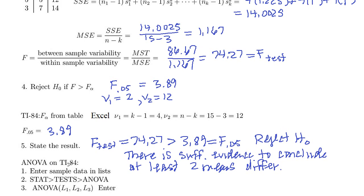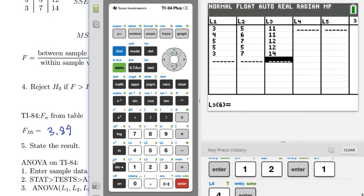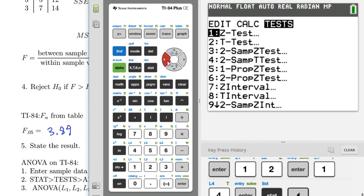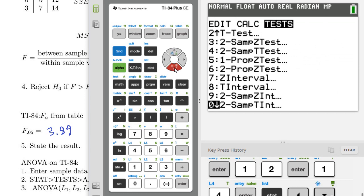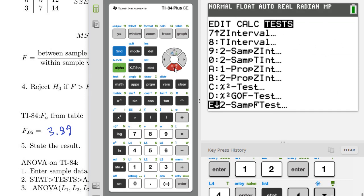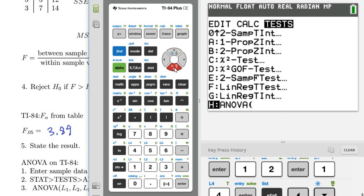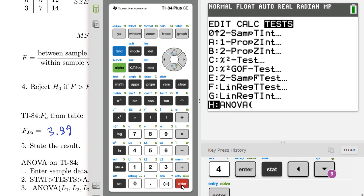And then we can check this on the TI-84 doing STAT ANOVA. So you'll enter the sample data into lists, and that I've already done. So this is the list for X1, X2, and X3. Then you go to STAT, TESTS, and then scroll down to ANOVA, which is the very last one. Right there. Enter.